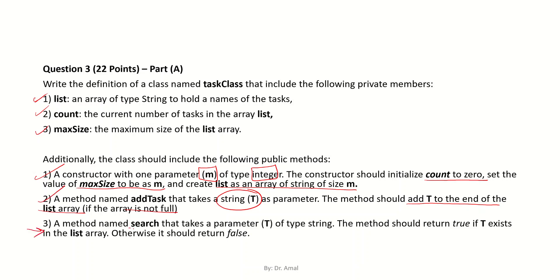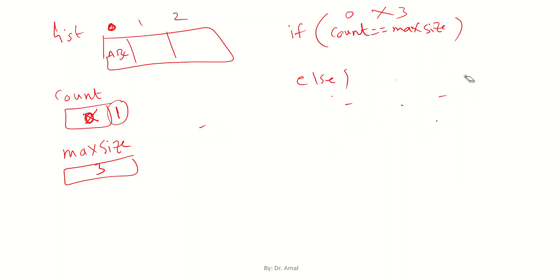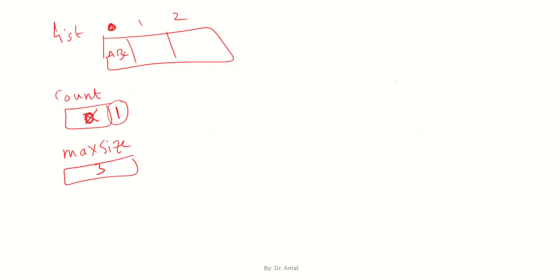Now the last method is search. It takes parameter t of type String and must return true if t exists in the array, otherwise false. So the return type is boolean. Assume the array has two elements: 'abc' and 'xyz', so count is 2. We take parameter t, for example 'abc', and we need to search if this t exists in the array. This means we need a for loop.